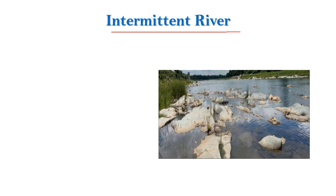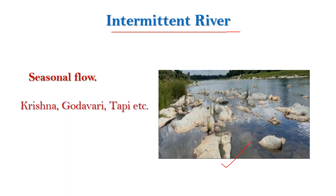Now let's look at intermittent rivers. These are seasonal rivers — they don't have flow throughout the year, and sometimes they get dried in summer, but they have abundant flow in the rainy season. For example, we have river Krishna, Godavari, and Tapi. These are some intermittent rivers.